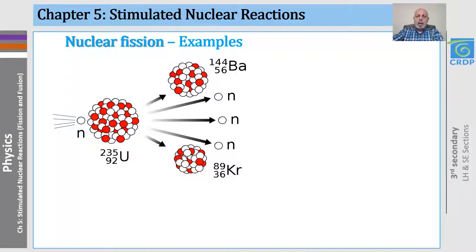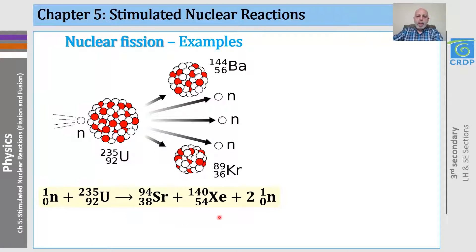Here are some examples of nuclear fission. We have a uranium-235 nucleus that is hit by a neutron, and then it will be divided into two lighter nuclei with the emission of three neutrons. Here is another example in which we get two neutrons, and here is a third one in which we can have three neutrons.